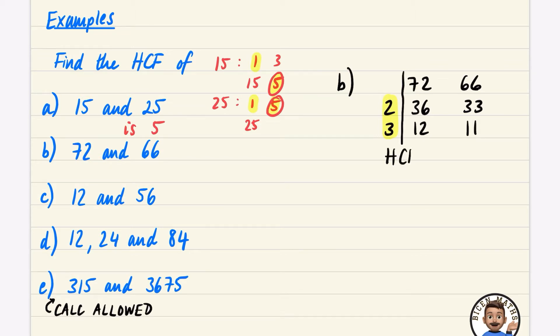We multiply together the 2 and the 3, so the highest common factor is 2 × 3 = 6. The highest common factor of 72 and 66 is 6.